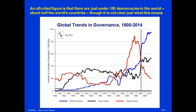The line between some aspects of democracy and all aspects of democracy is very difficult to draw. As you can see, the biggest rise after the 1980s was not just in the number of democracies, which rose dramatically, but also in the number of anocracies — countries that it was difficult to determine whether or not they were truly democratic.